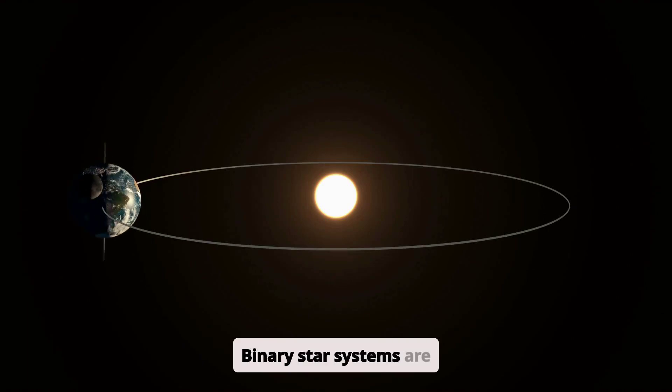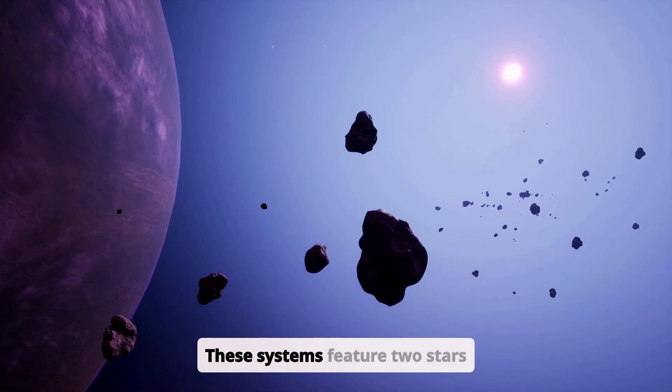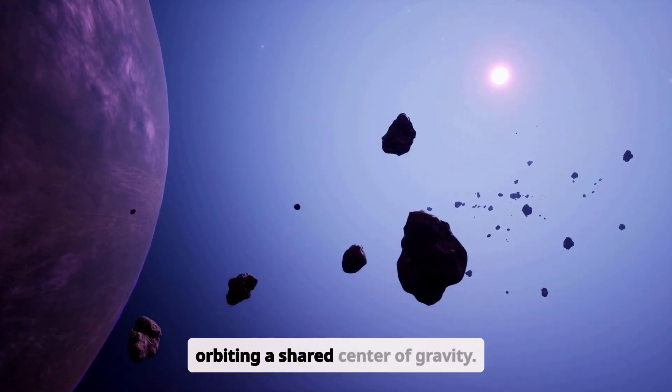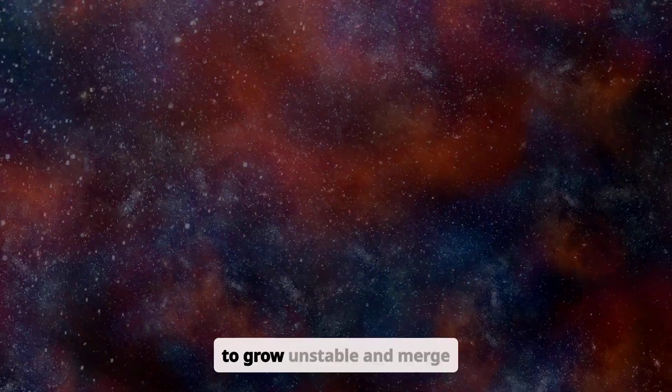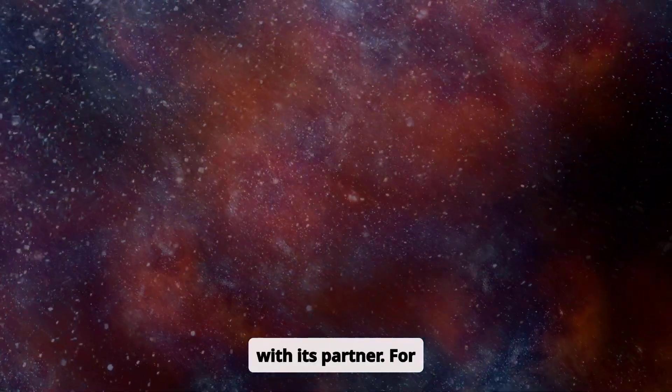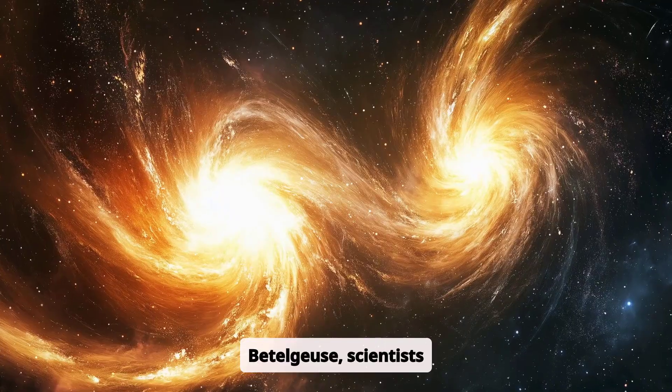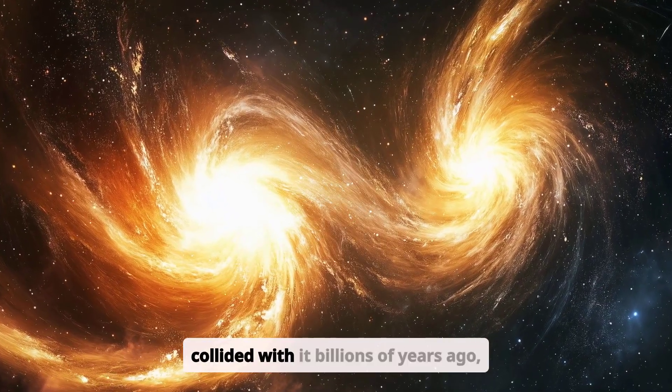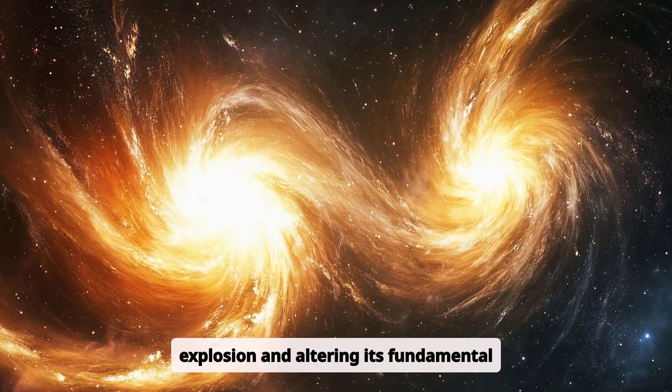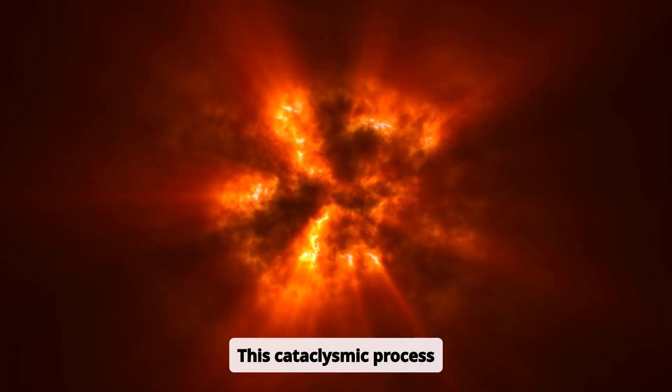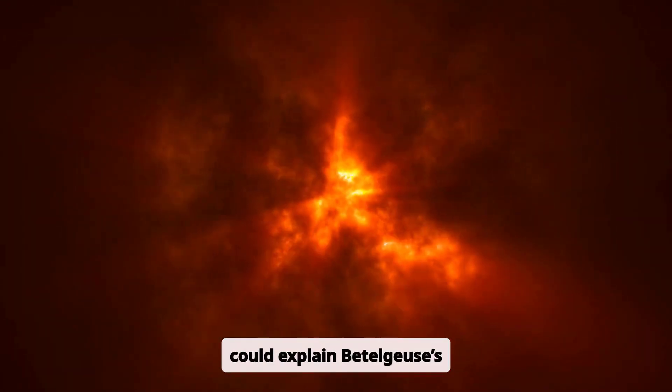Binary star systems are common in the universe. These systems feature two stars orbiting a shared center of gravity. In such a system, it's possible for one star to grow unstable and merge with its partner. For Betelgeuse, scientists theorize that a companion star collided with it billions of years ago, merging in a fiery explosion and altering its fundamental properties. This cataclysmic process could explain Betelgeuse's strange features.